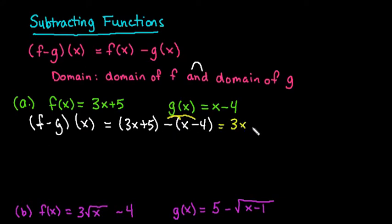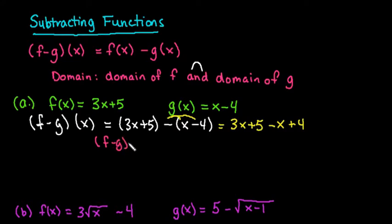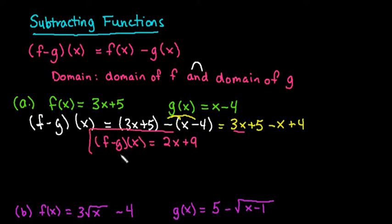You have to make sure that you distribute that in. So the first part would still be 3x plus 5 — it does not change. But this would become minus x and plus 4, because we're doing a negative 1 times x and a negative 1 times negative 4. So to find the full difference, f minus g of x, we would just combine like terms. So 3x minus x is 2x, and 5 plus 4 is 9. So this would be the final answer — the difference between those two values.